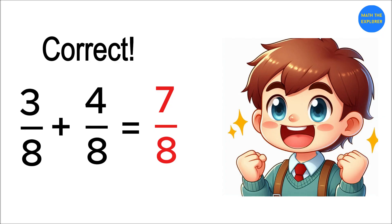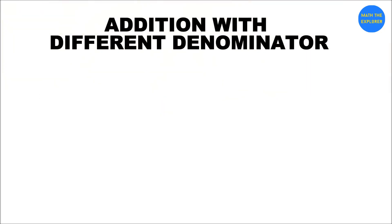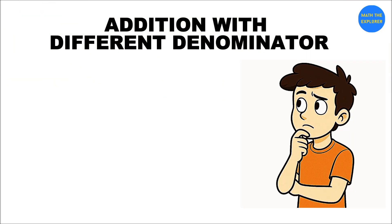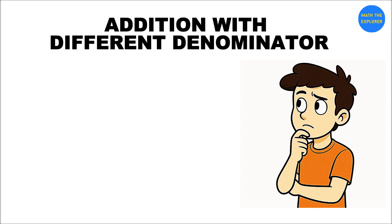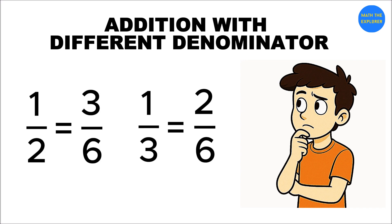Now what if denominators are different? You need a common denominator. Example: 1/2 + 1/3. Step one: find the least common denominator between 2 and 3. The LCD is 6. Step two: rewrite. 1/2 becomes 3/6 and 1/3 becomes 2/6.